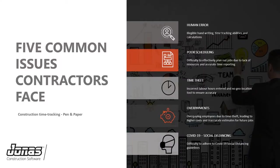Before we jump into the live demo, let me go over some common issues contractors face with traditional time tracking methods. First is human error — whether someone has messy handwriting, the project manager can't read it, or someone writes eight hours instead of seven by accident. Also poor scheduling — it's hard to plan jobs effectively because you can't see accurate hours for previous jobs. There's also time theft: you can't control what's written on paper, and without a geolocation tool it's hard to prove those hours are accurate. That leads to overpayments — because of time theft you're overpaying employees, costs are higher, and you may be losing money on jobs.